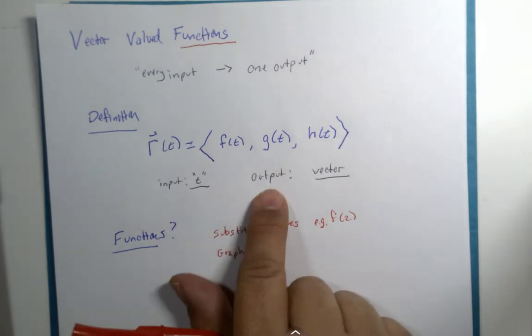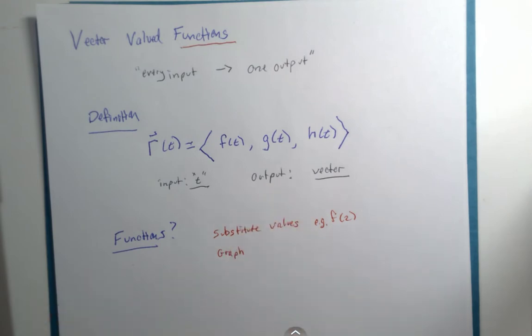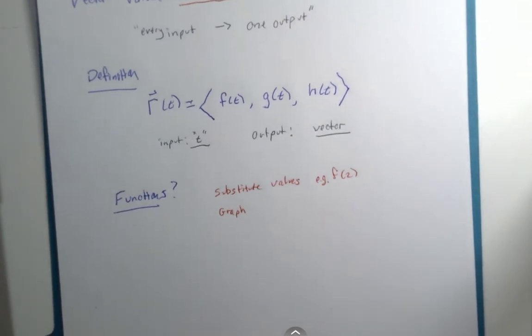Are there any inputs that cause this to be undefined? And then the same thing is true for what kind of outputs are we going to get. The terms for that were domain and range.